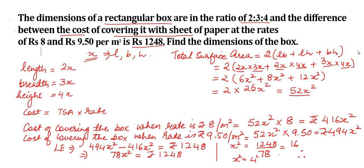Now, substituting this value of x in length, breadth and height: length will be 2 × 4 equal to 8 meters, breadth is equal to 3 × 4 equal to 12 meters, and height is equal to 4 × 4 equal to 16 meters. Therefore, dimensions of the box are length equal to 8 meters, breadth equal to 12 meters, and height equal to 16 meters.